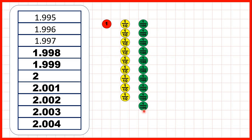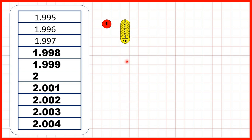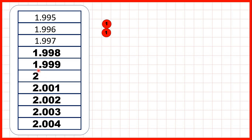But now we have ten hundredths counters, and we can exchange those for one tenth, because one tenth is the same as ten hundredths. But now we have ten tenths counters, and ten tenths is the same as one whole. So that's why we have two wholes altogether now. Notice we were just exchanging here — exchanging ten of one place value for one of the place value to the left, and we did that three times. So that's why, after 1.999, when we added just one more thousandth counter, we got two wholes.